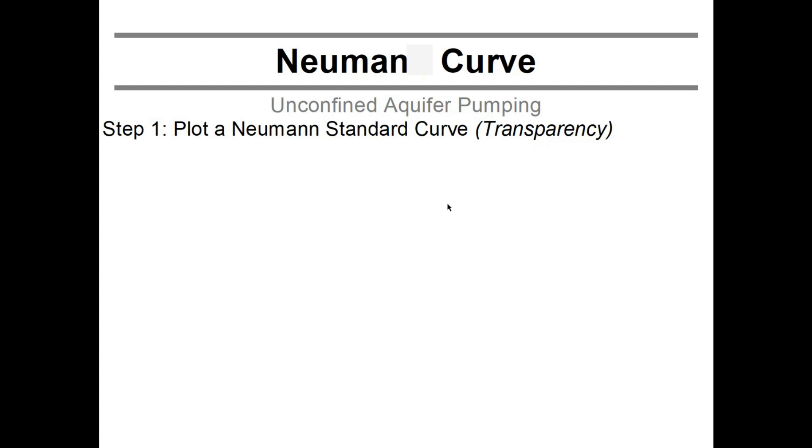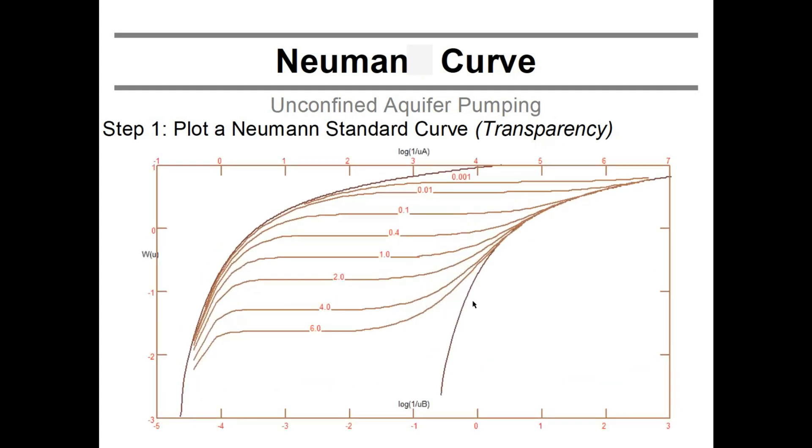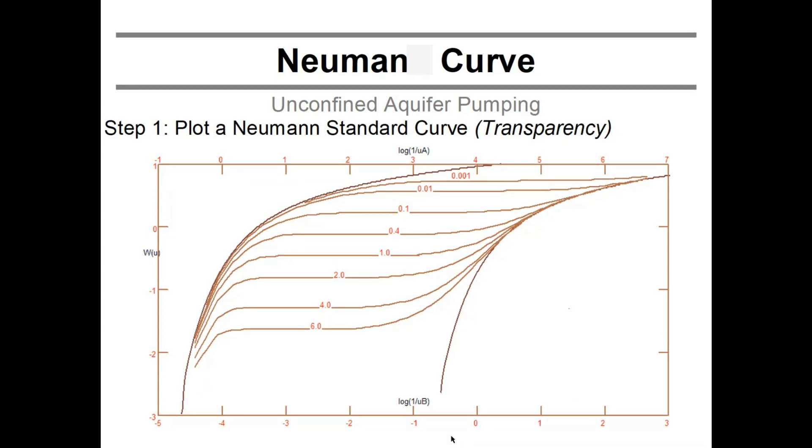So how would you do this? Step one, you're going to plot this Neuman standard curve. If you can do it on a transparency, it would be even great, but you can also use a light table. So you get something like that. Here is my basic standard Neuman curve. This one is electronically prepared, looks exactly like that.